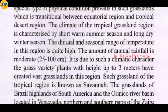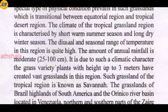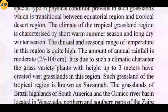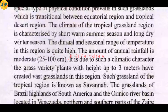There is considerable temperature difference due to climate change. The amount of rainfall is moderate — 25 to 100 centimeters. Due to such climatic character, grass variety plants with a height of up to three meters have created vast grasslands in this region.